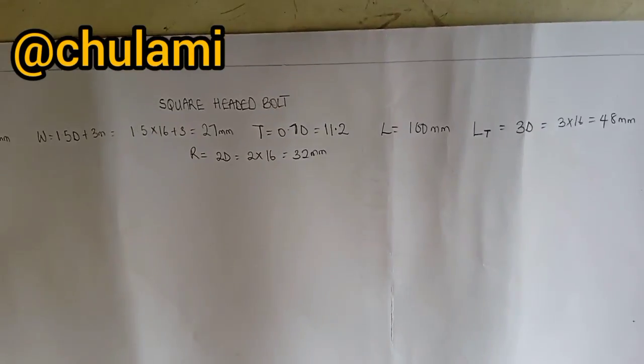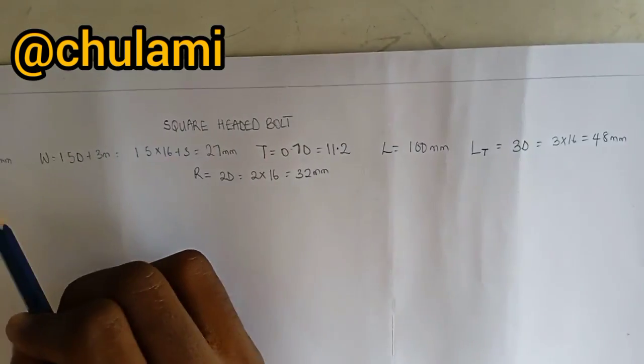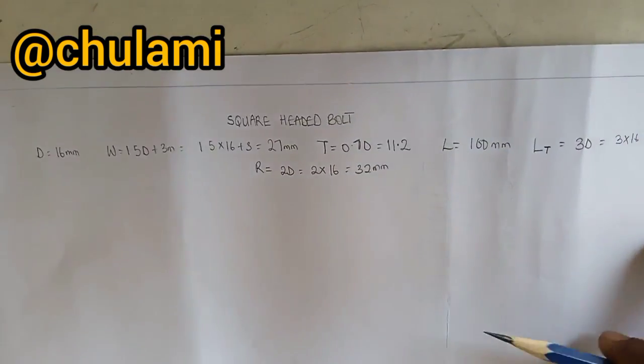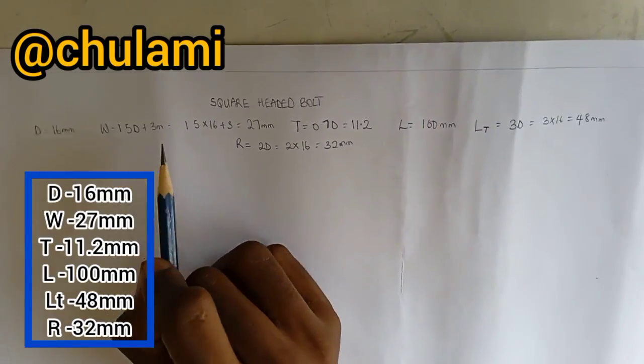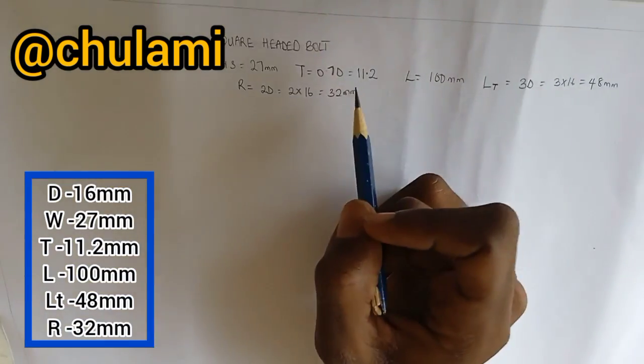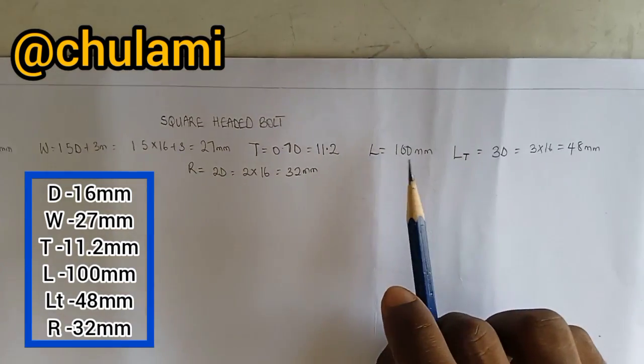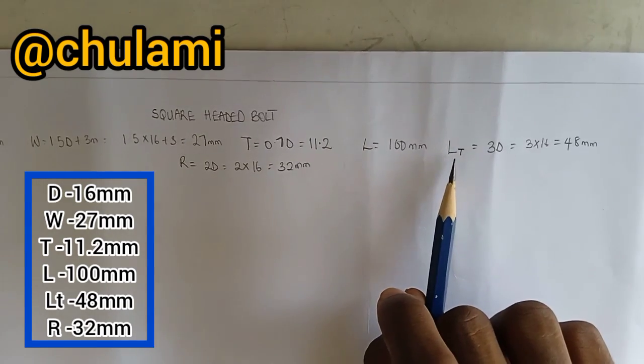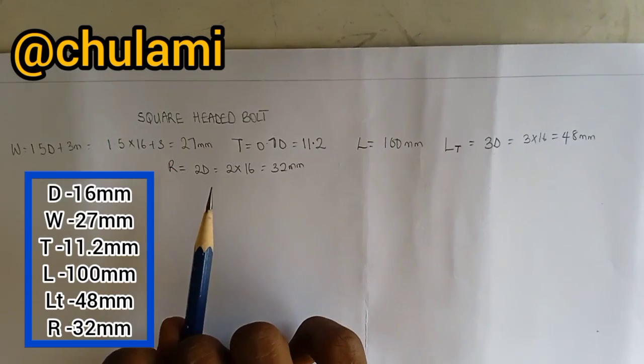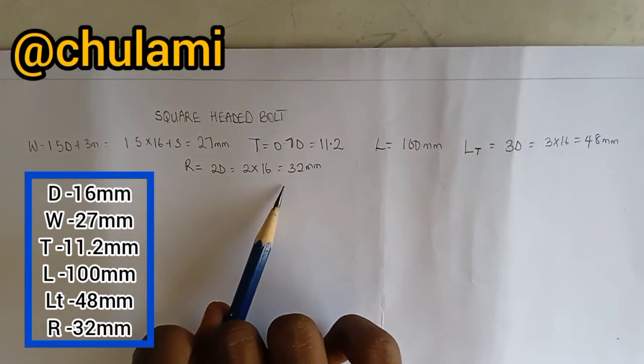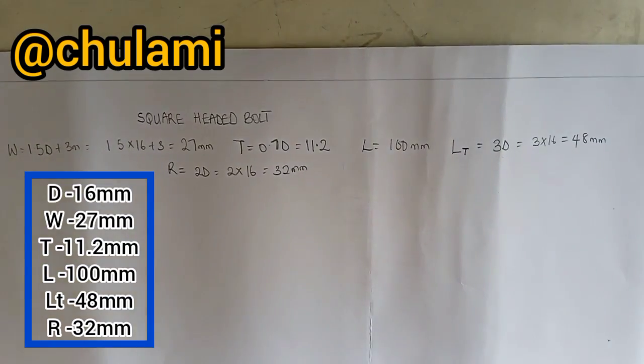Okay, so in drawing a square headed bolt, we are given parameters above. Our diameter is 16mm, our width is 1.5D plus 3 which gave us 27mm, our thickness is 0.7D which is 11.2mm, our length we set to use 100mm, our thread length is 3D which is 48mm, and our radius of the chamfer which is 2D is given as 32mm. So with these parameters, we will draw a square headed bolt.